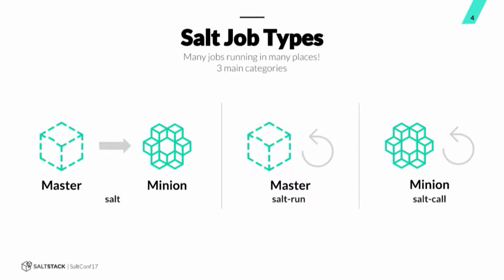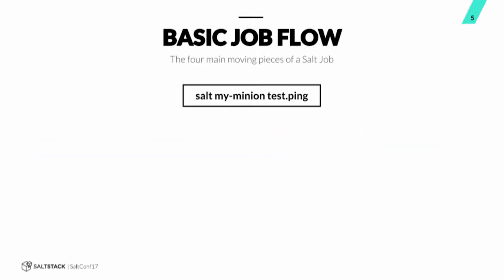This will hopefully give you a deeper understanding of how Salt works that you can use for troubleshooting, or figuring out how to fire your own events on the event bus and things like that. So let's talk about the basic job flow. There are four main components we're going to talk about with Salt execution, and we're going to be dealing with this really basic command: salt my-minion test.ping.